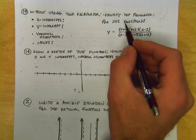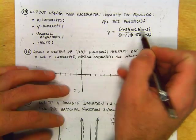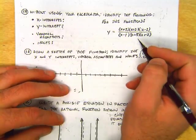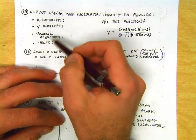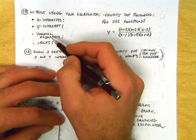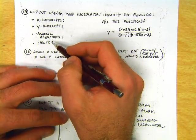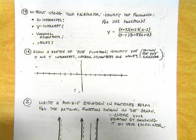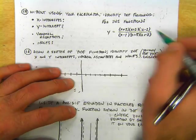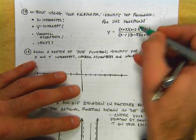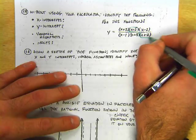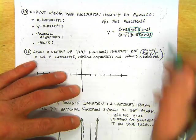Alright, without using your calculator, identify the following for this function. I'm not going to do these in the order here because these are not in the order of the process that we put together yesterday. What's the first thing that you should look for? Holes, because you want to find matchers top and bottom.